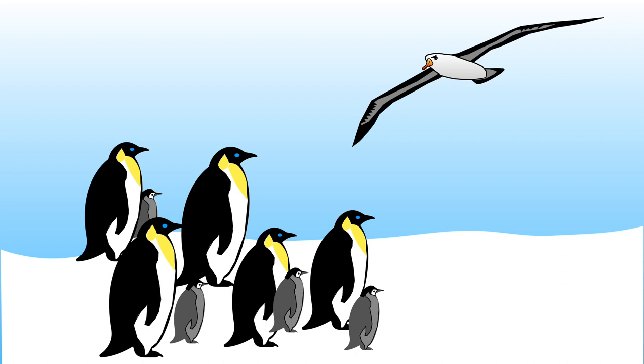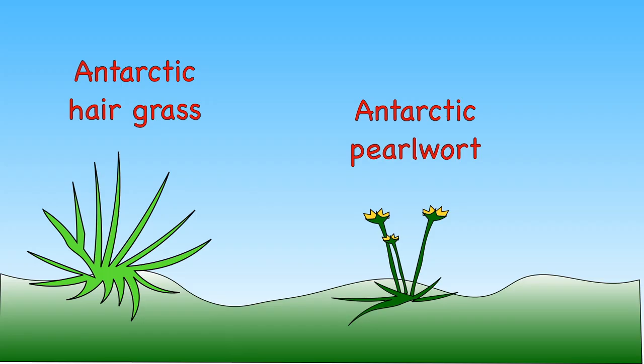The albatross is a very large seabird that spends most of its time in flight over Antarctica. It has a wingspan of up to 3.5 meters and survives on jellyfish and fish. As like the Arctic, trees are not able to grow on Antarctica. It is too windy and too cold.